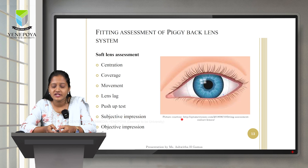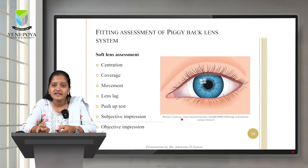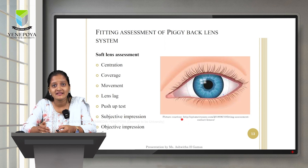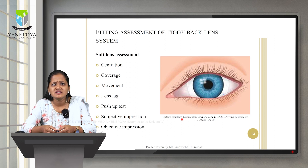The reason soft assessment comes first is that RGP fitting involves the use of fluorescein stain. If fluorescein stain is applied while a soft contact lens is on the eye, the soft lens will absorb the stain and the lens will be wasted. Starting with the soft contact lens assessment, there are several steps to follow.